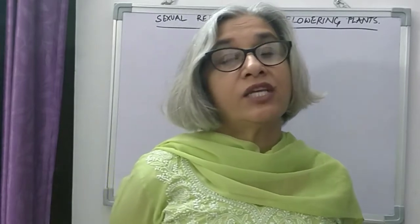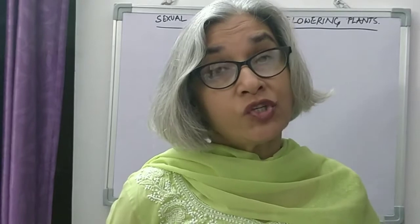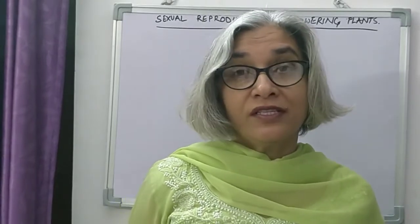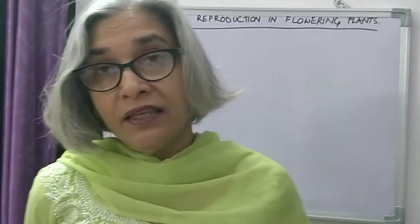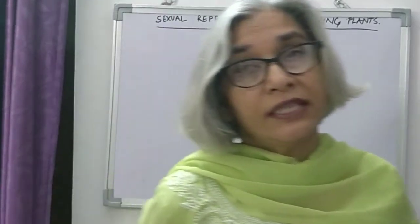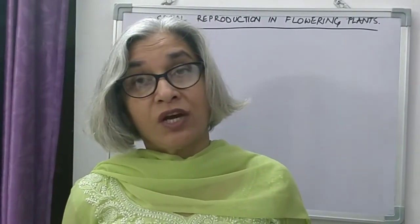Good morning class. Today we will be starting with sexual reproduction in flowering plants. Flowering plants are also called angiosperms. They are the most evolved plants on this earth because they reproduce sexually, meaning they have male and female parts in reproductive units which are called flowers — and so the name comes: flowering plants.